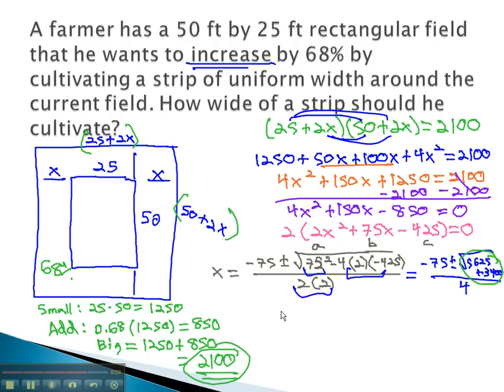By adding together those terms in the square root, we end up with negative 75, plus or minus the square root of 9025, over 4.